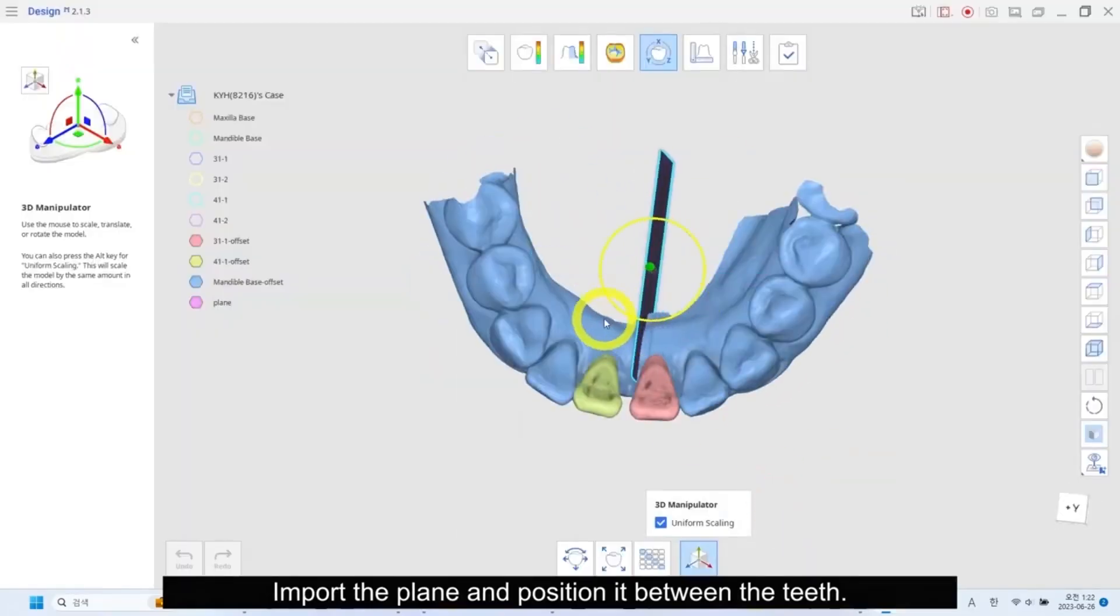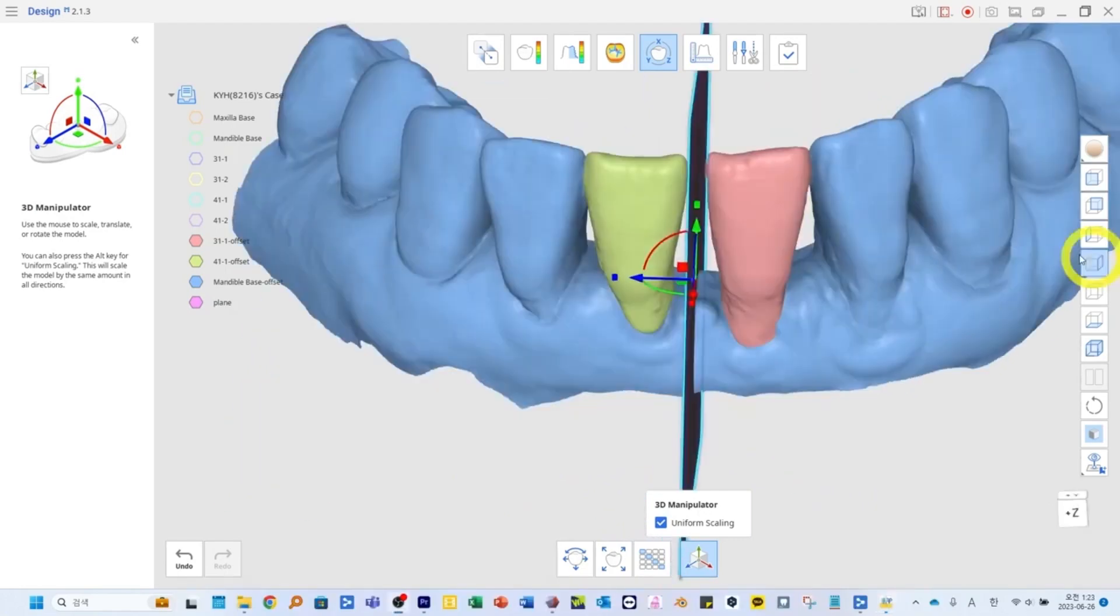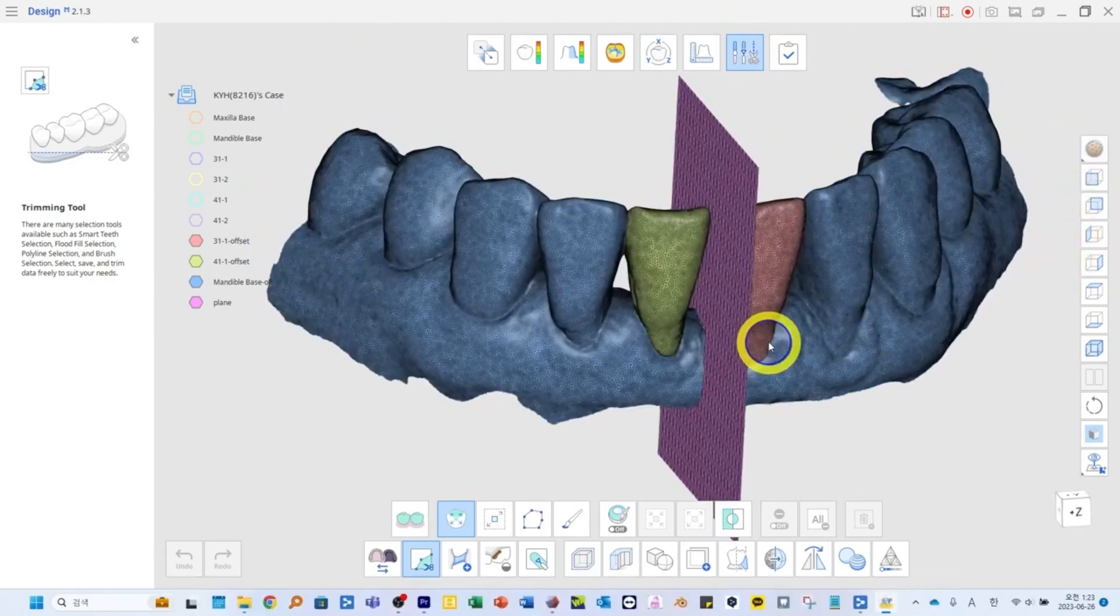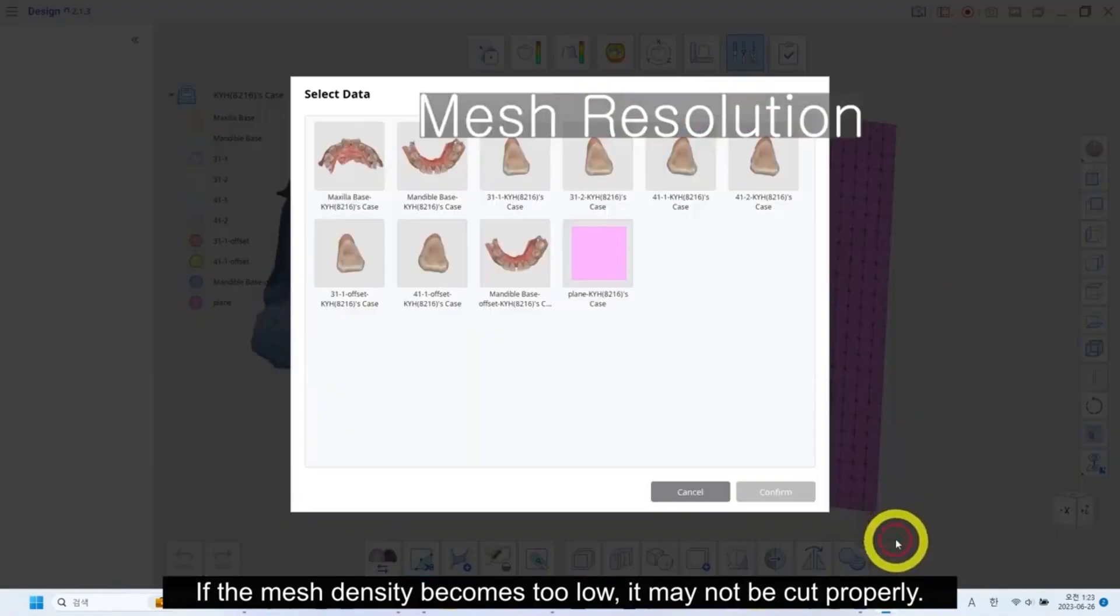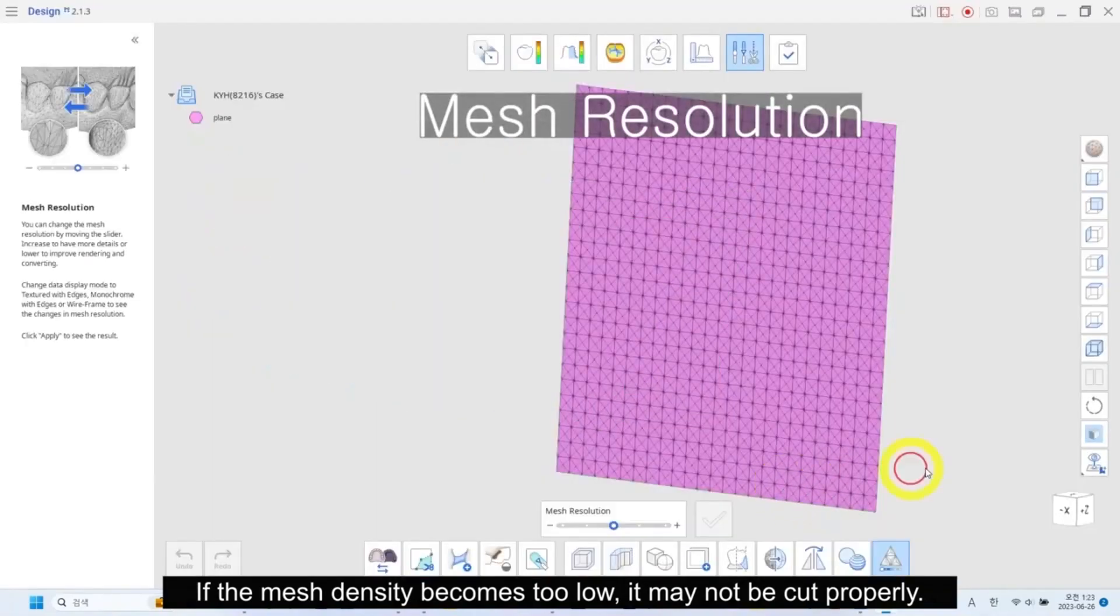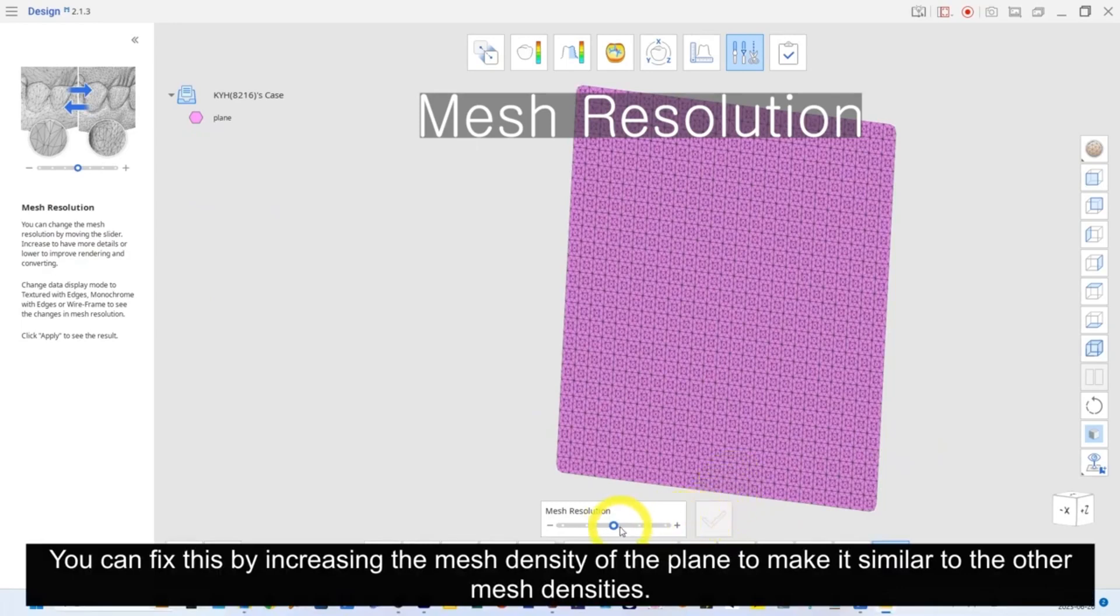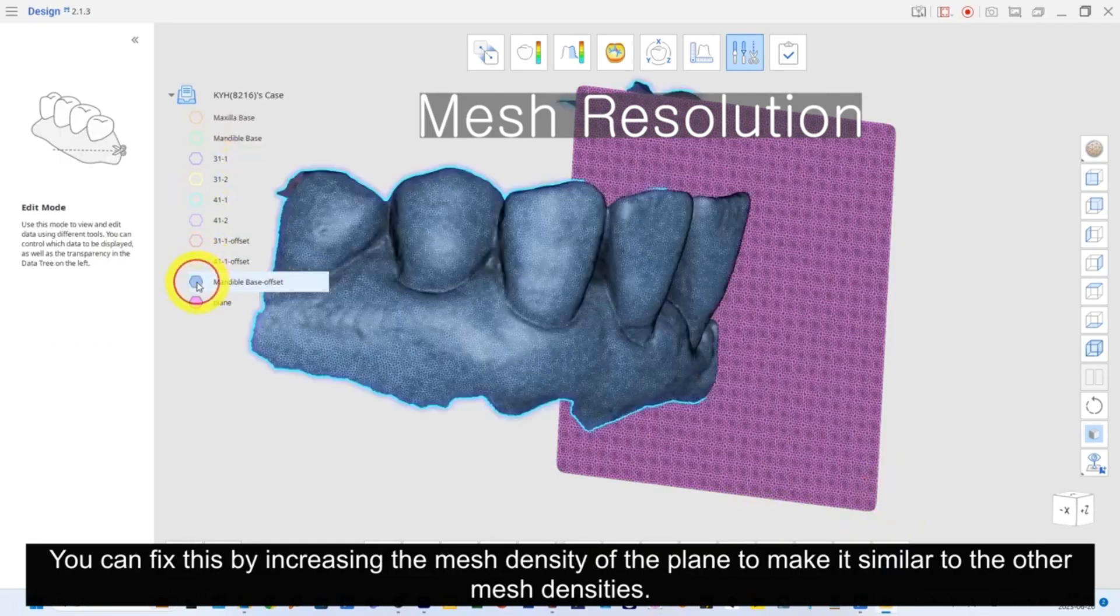Import the plane and position in between the teeth. Depending on the mesh density, the blend result may vary. If the mesh density becomes too low, it may not be cut properly. You can fix this by increasing the mesh density of the plane to make it similar to the other mesh densities.